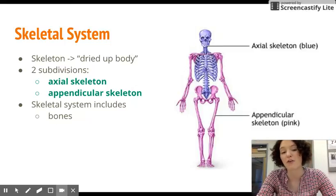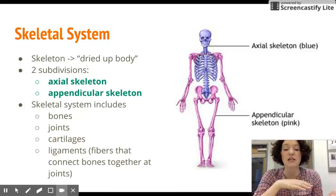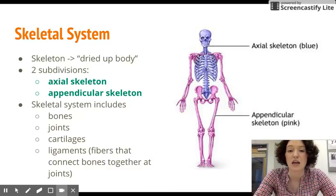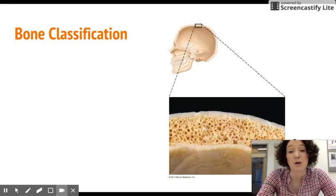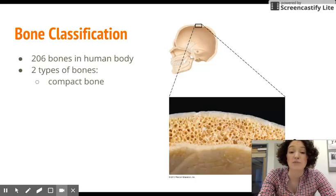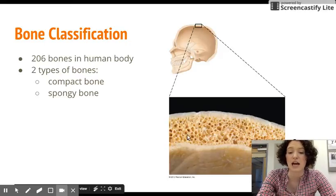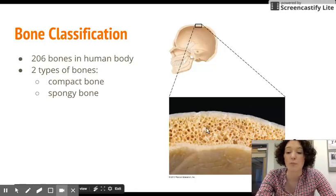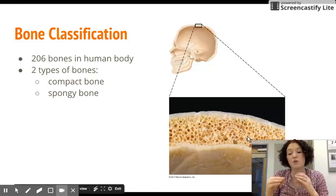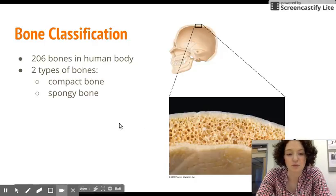The skeletal system also includes things besides bones — it includes joints, cartilages, as well as ligaments, which are the fibers that connect bones at the joints. For bone classification, there are 206 bones in the human body. We can classify them in two ways: there's compact bone, which is dense and looks smooth and homogenous, and spongy bone, which has lots of little needle-like pieces of bone with open space. Some bones have both compact and spongy bone, while others are made mostly of one type.